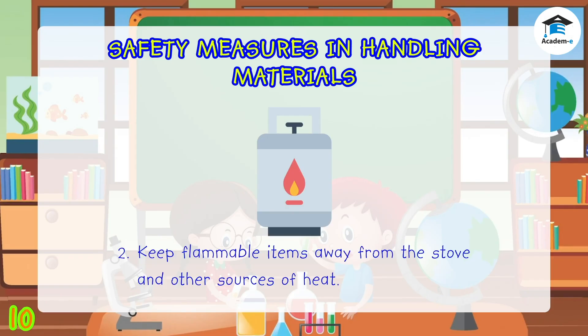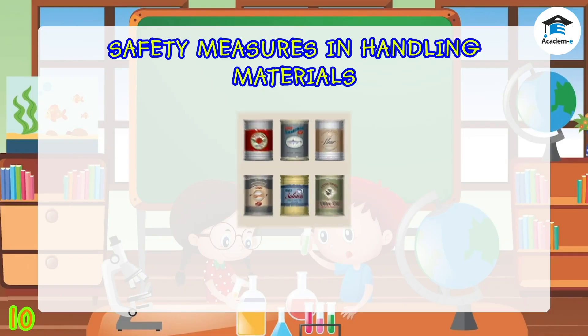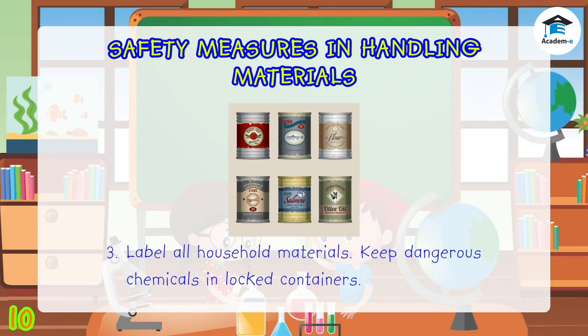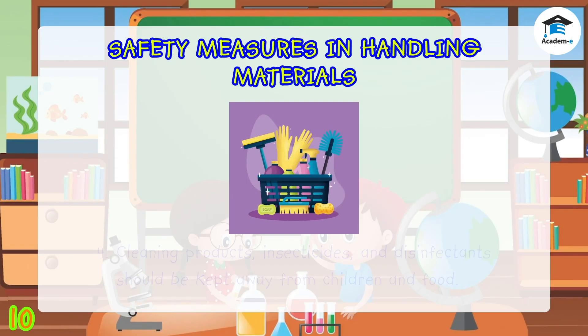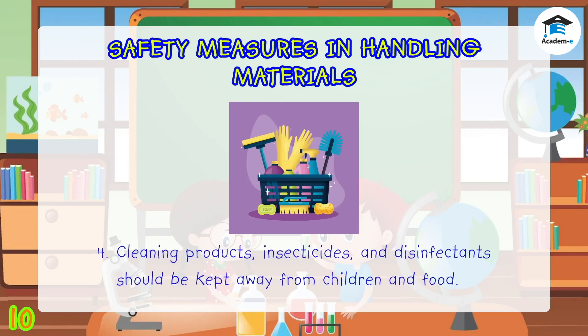Three: label all household materials; keep dangerous chemicals in locked containers. Four: cleaning products, insecticides, and disinfectants should be kept away from children. These should not be kept near places where you store your food, as these chemicals may spill and contaminate the food, which could lead to poisoning.